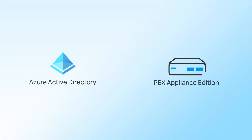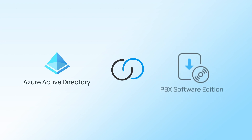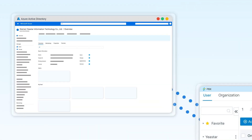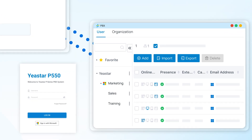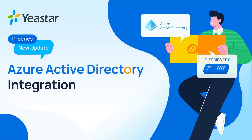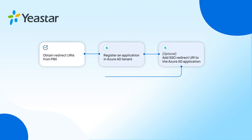Microsoft Azure Active Directory can now be integrated with Yeastar P-Series PBX Appliance Edition, Software Edition, and Cloud Edition. With this integration, you can synchronize your Azure Active Directory users, organizational units, and groups to the PBX, and allow synced Azure Active Directory users to directly log into Linkus UC clients by their user accounts through single sign-on. In this video, we'll take Yeastar P-Series PBX Appliance Edition as an example and show you how to realize this integration step-by-step.